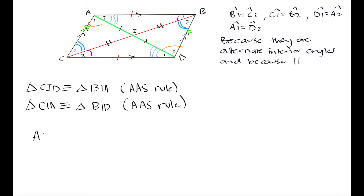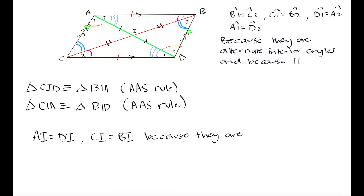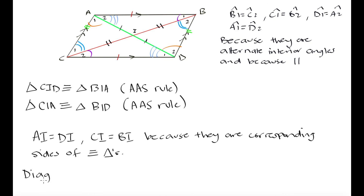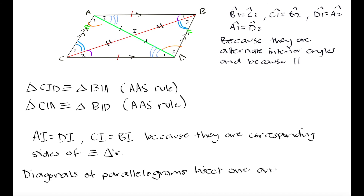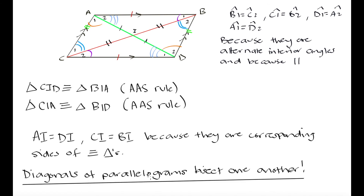To summarize: AI equals DI and CI equals BI, because they are corresponding sides of congruent triangles. Therefore, the diagonals of a parallelogram bisect one another — each diagonal splits the other into two parts of equal length. This is one of our main takeaways: diagonals of parallelograms bisect one another.